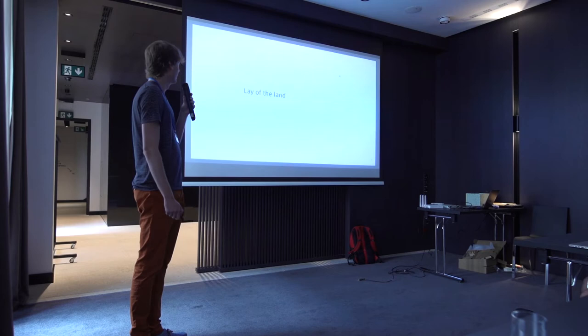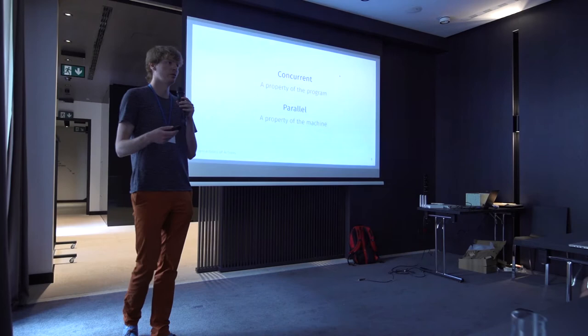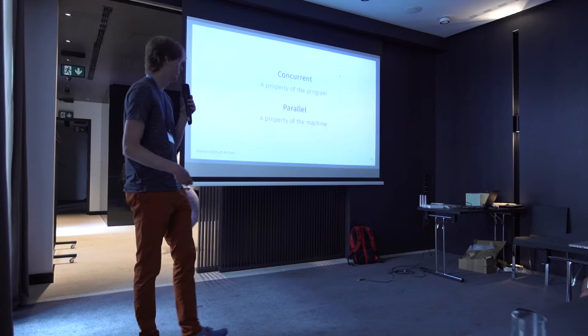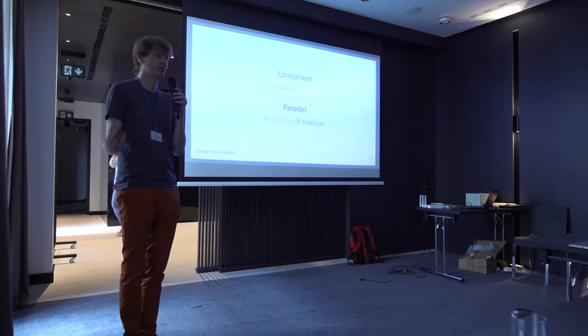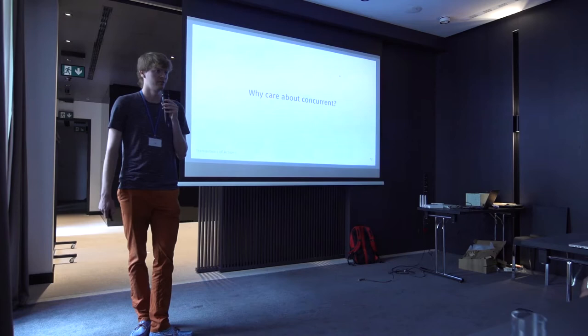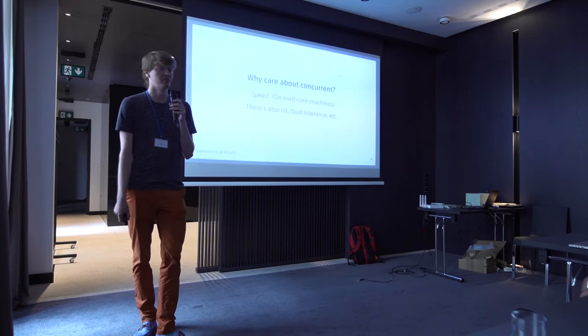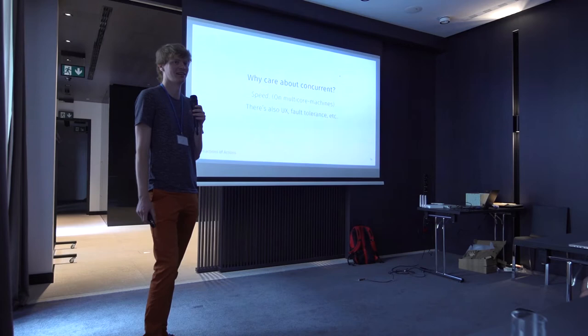The lay of the land — why are we doing this? There are two definitions: concurrent and parallel. Concurrent is a property of your program and parallel is a property of the machine. Your program can be concurrent in the sense that it consists of different work items that can in theory be executed concurrently. Parallelism is what actually happens when it runs on a computer — things actually run at the same time. This is a matter of potential versus realization. Why care about this? Speed on multi-core machines, and also UX, fault tolerance, and other concerns.